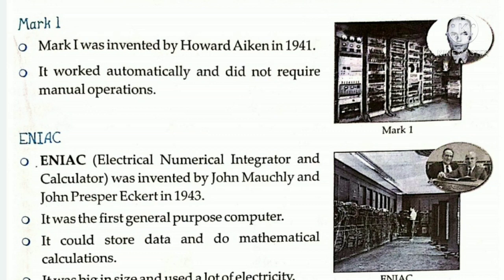Next is ENIAC. ENIAC, Electrical Numerical Integrator and Calculator, was invented by John Mosley and John Presper Eckert in 1943. It was the first general purpose computer. It could store data and do mathematical calculations. It was big in size and used a lot of electricity. It generated a lot of heat which caused frequent malfunctions.